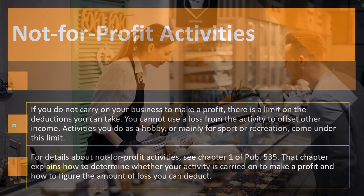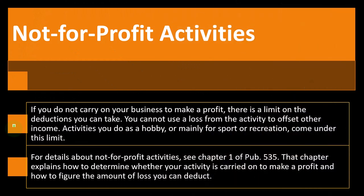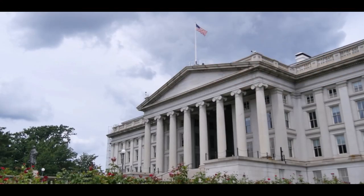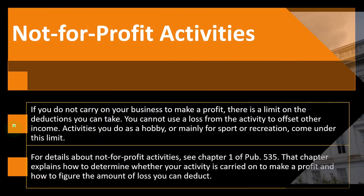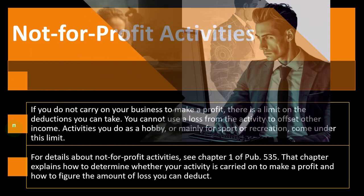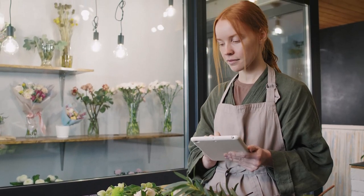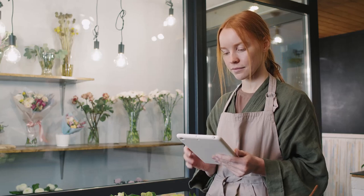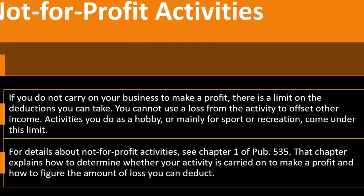Other types of businesses are more straightforward. Obviously, if you do tax preparation, nobody does tax preparation as a hobby generally — so the IRS is less likely to question it. But if you're a horse racer or traveling the world as a photographer on the side with losses for multiple years, the IRS is more likely to say that doesn't look like a business. So you want to make sure that you structure it and make the argument. The chapter explains how to determine whether your activity is carried on for profit and how to figure the amount of loss you can deduct.